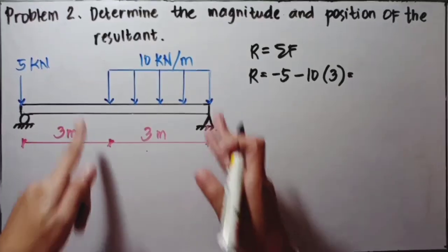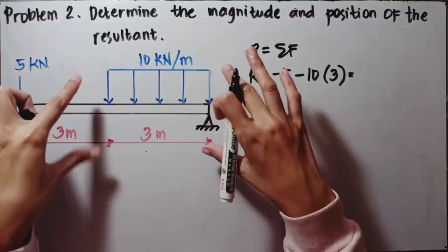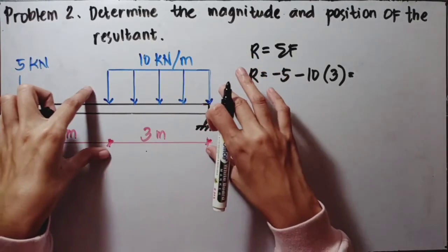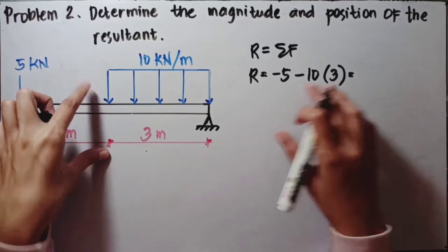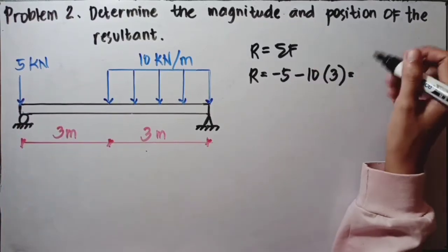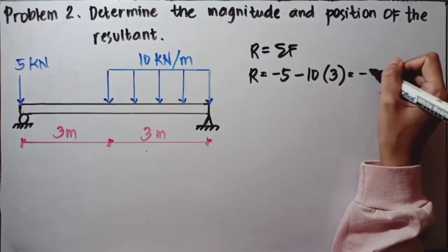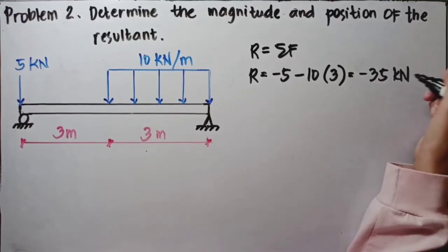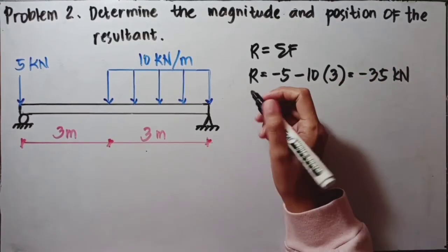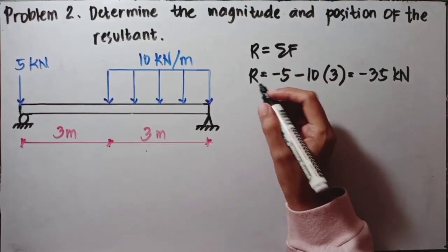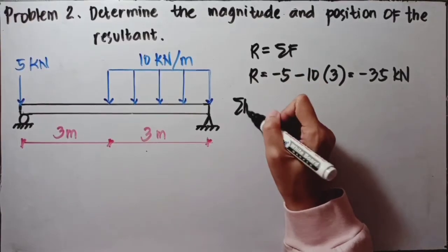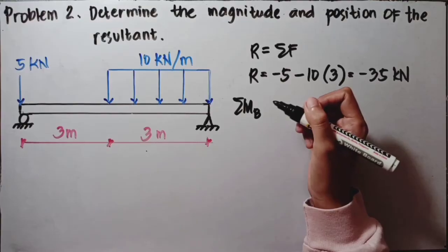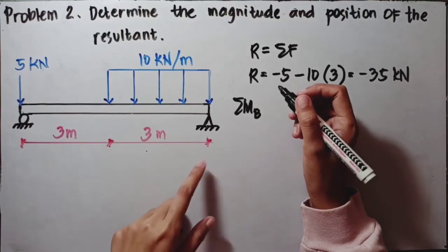We multiply the magnitude of the uniform load by its distance — 10 kilonewtons per meter spans 3 meters, so 10 times 3, plus negative 10. Calculating this, R equals negative 35 kilonewtons. Don't forget the unit. Next, we solve for the moment. Same as before, but now we take moments at B.